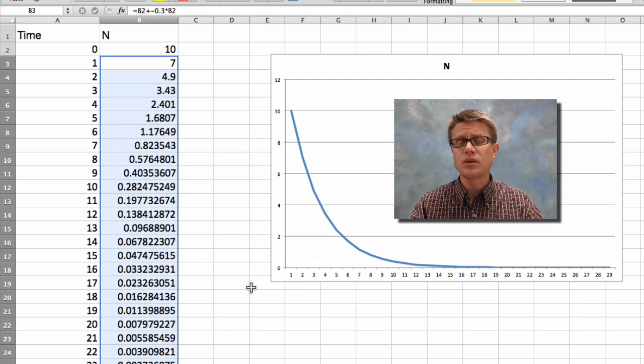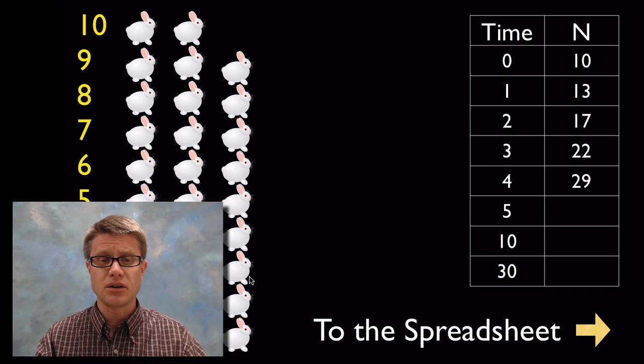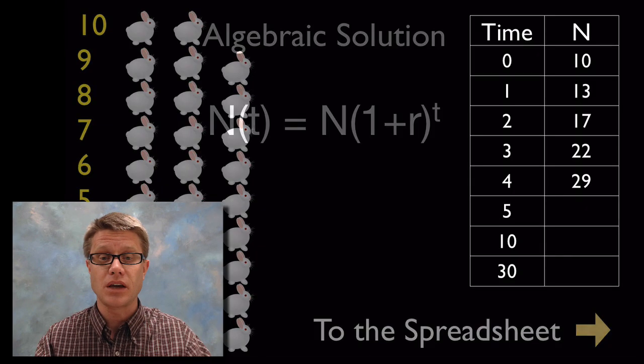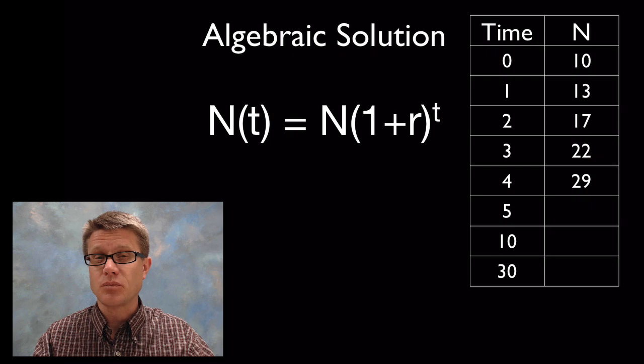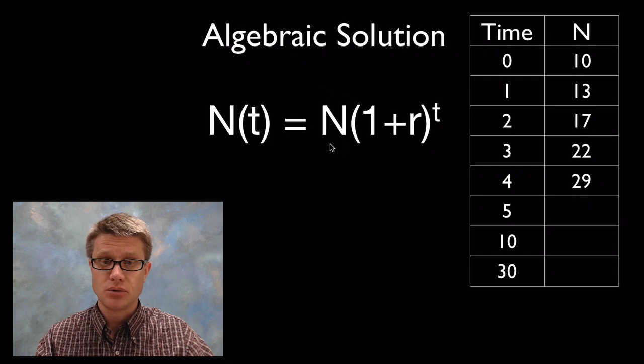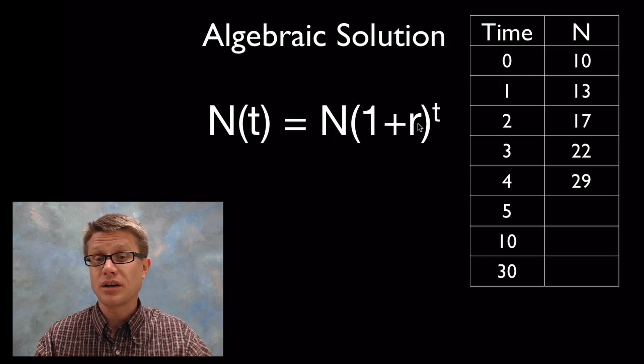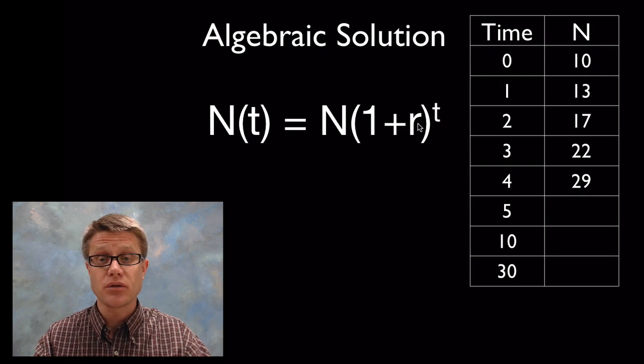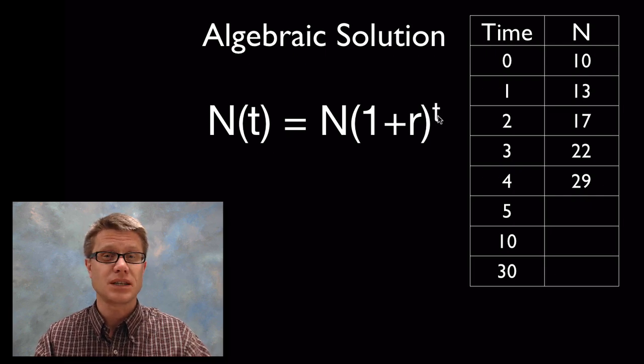But you don't always have a spreadsheet with you. Sometimes you just need a calculator and a little bit of algebra. So let's go to the algebra. This is going to be the algebraic solution to this. And so we've got an equation for exponential growth. And so change in n over t is going to be equal to N, which is going to be our population size, times 1 plus r. Where r is going to be the growth rate. And then we're going to raise that to t. Where t is going to be equal to time.